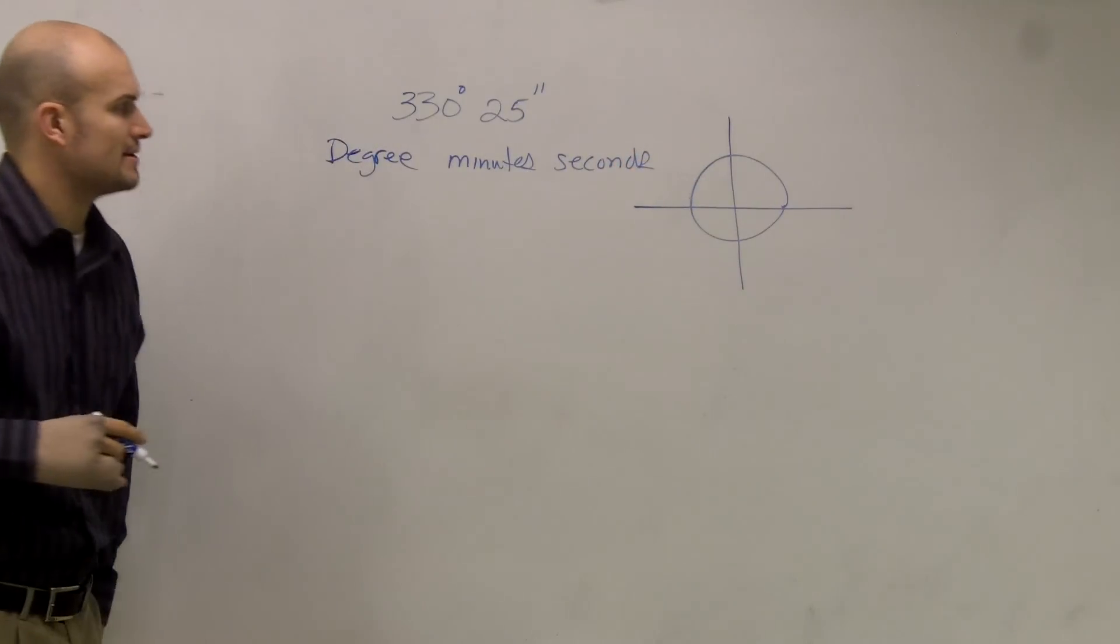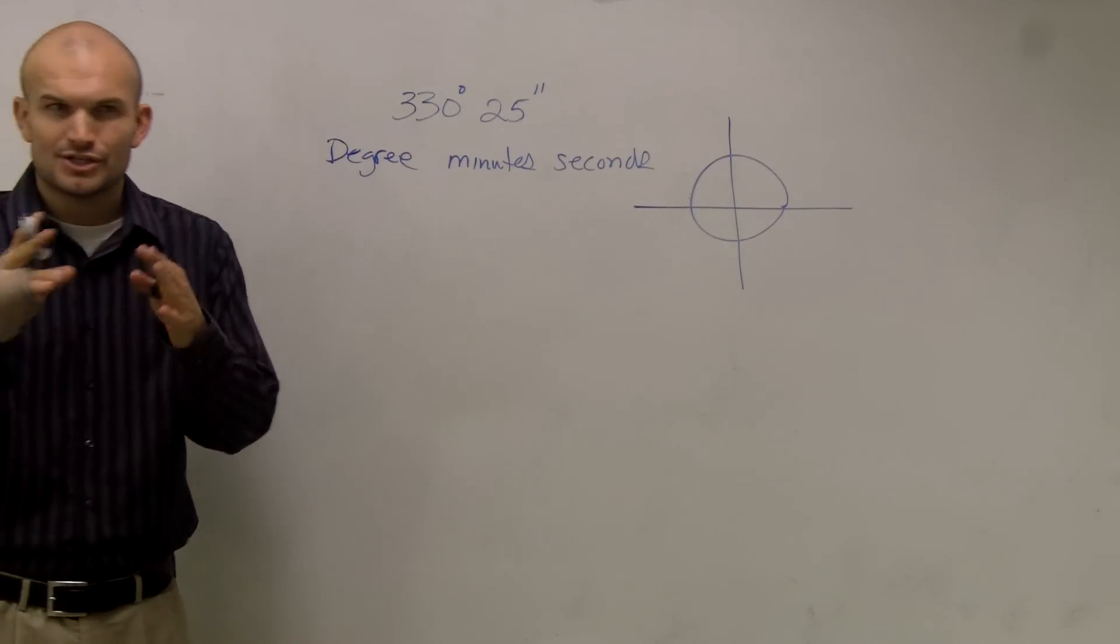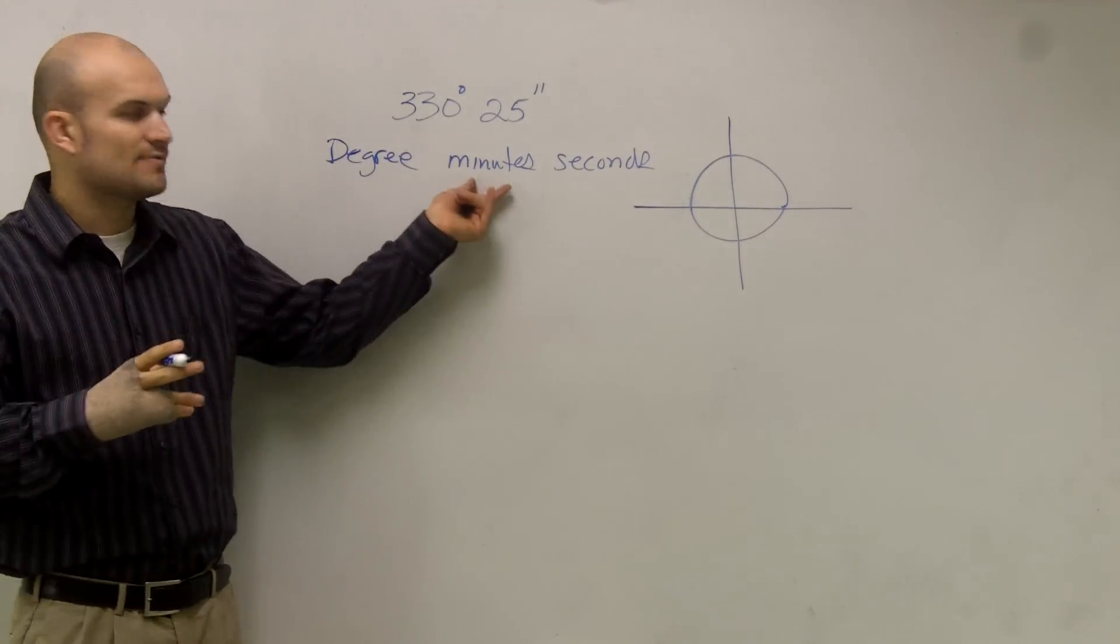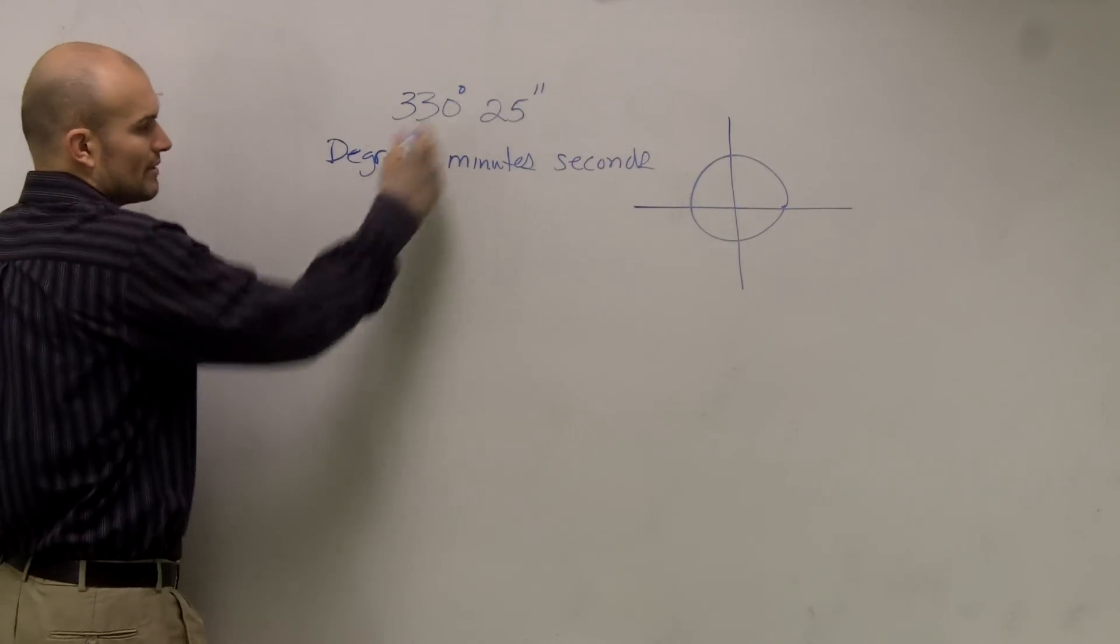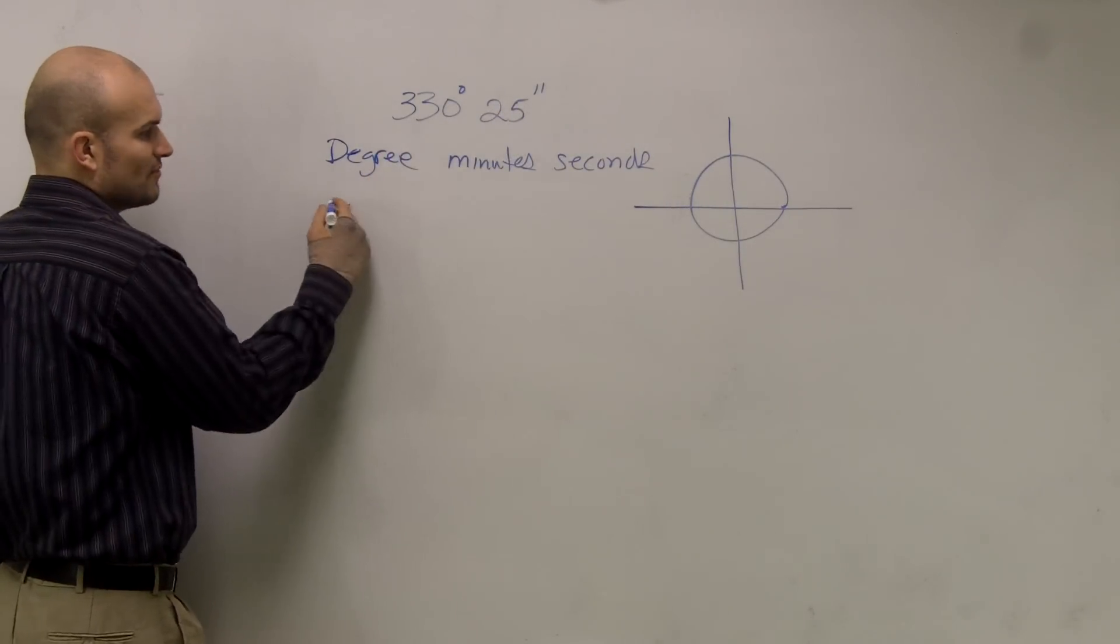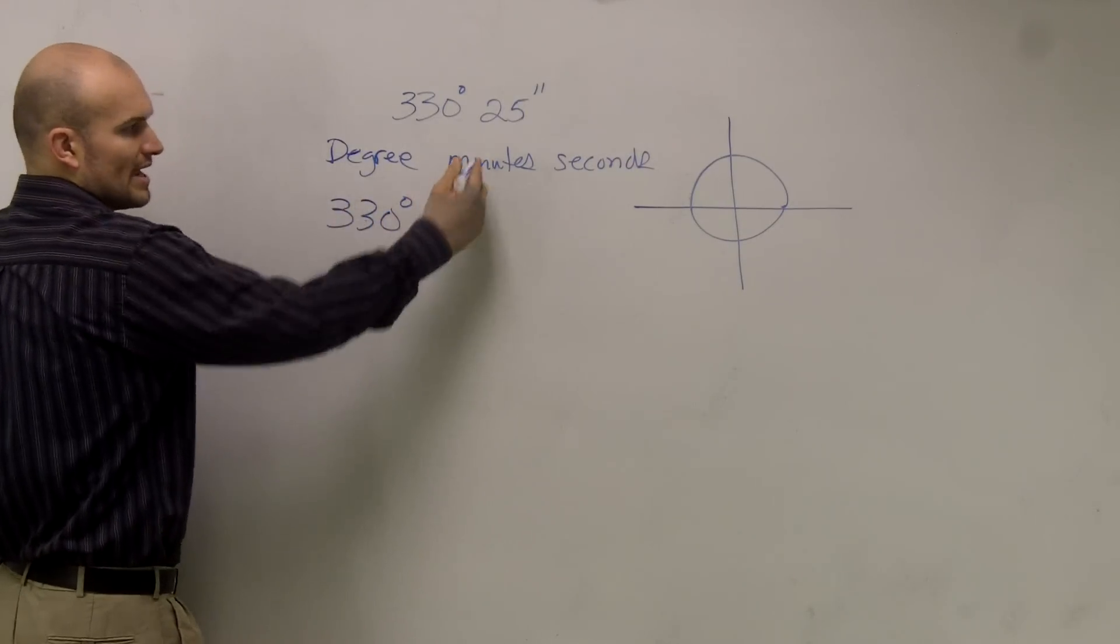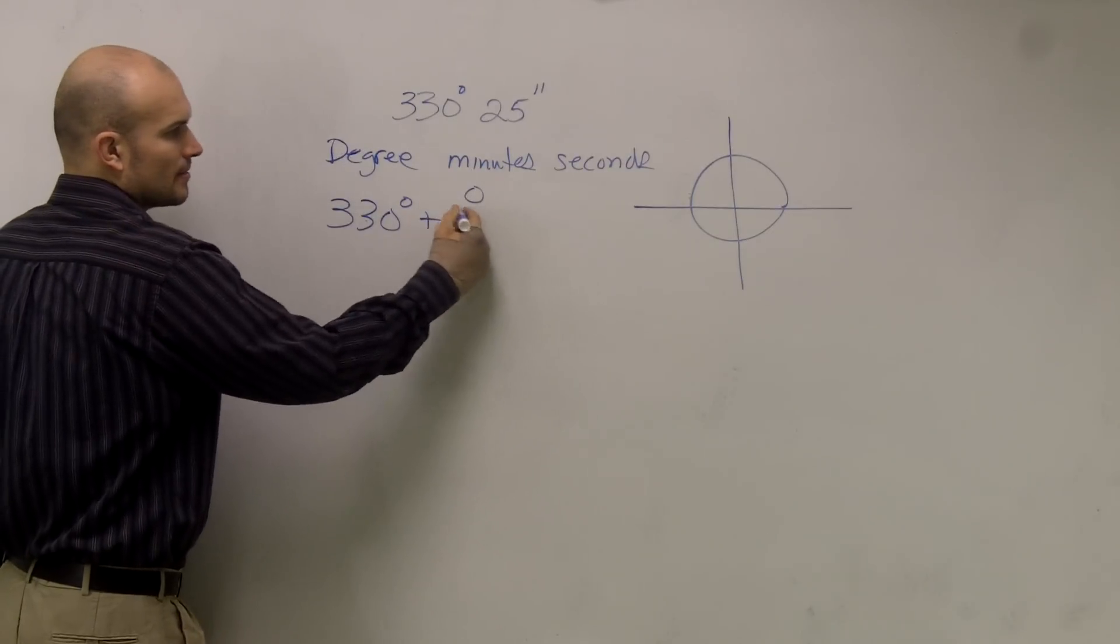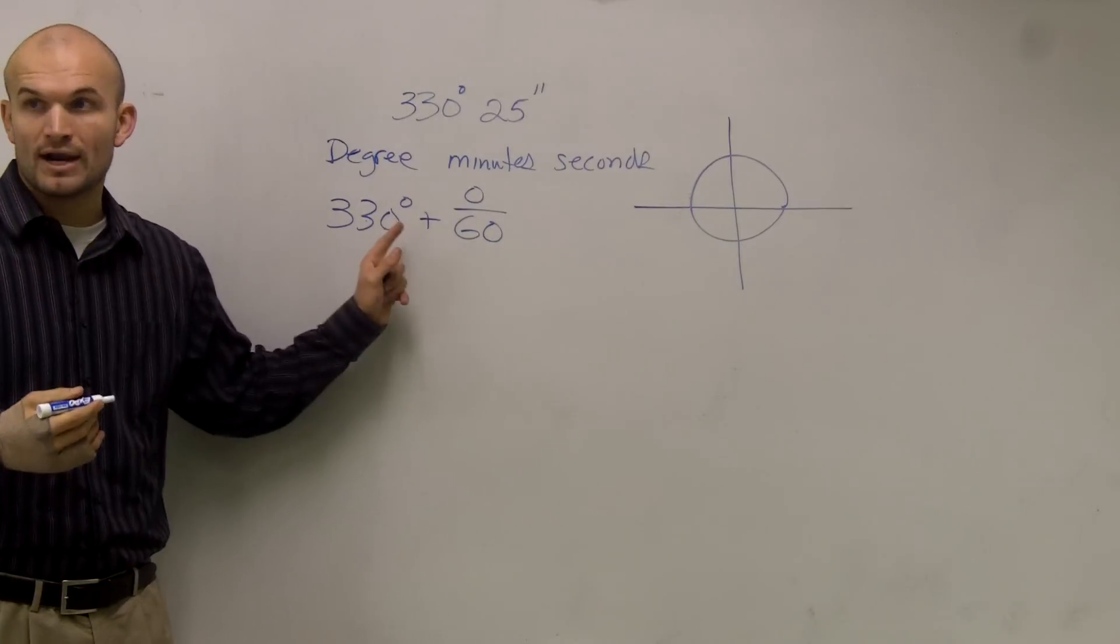So here's how you're going to do that. Think of degrees as an hour, just in terms of a measurement, think of it as an hour. If I think of minutes, how many minutes are in an hour? 60. So when we're going to write a number like this in decimal form, we have 330 degrees. We have zero minutes. But if we did have minutes, you can write it over 60, because there's 60 minutes in one hour.